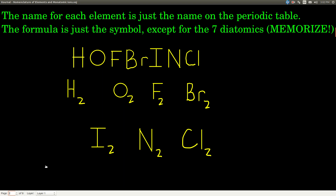The only thing is that there are seven elements whose elemental form is diatomic. Di means two; atomic means atoms. They are hydrogen, oxygen, fluorine, bromine, iodine, nitrogen, and chlorine. If you write them in this order, it makes a mnemonic device: Hofbrinkl. It spells Hofbrinkl — a nonsense word, but if you remember Hofbrinkl, you have the seven diatomic elements.